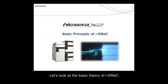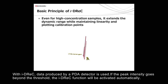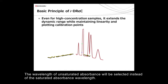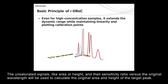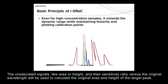Let's look at the basic theory of iDREC. With iDREC, data produced by a PDA detector is used. If the peak intensity goes beyond the threshold, the iDREC function will be activated automatically. The wavelength of unsaturated absorbance will be selected instead of the saturated absorbance wavelength. The unsaturated signals like area or height and their sensitivity ratio versus the original wavelength will be used to calculate the original area and height of the target peak.